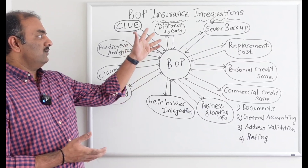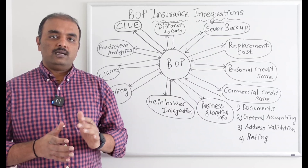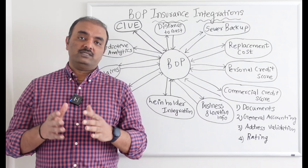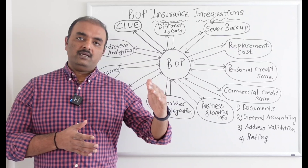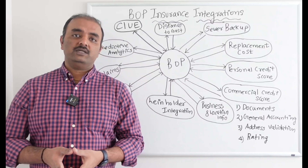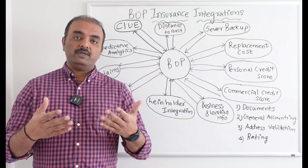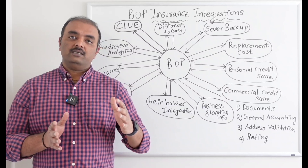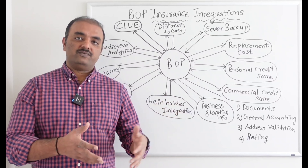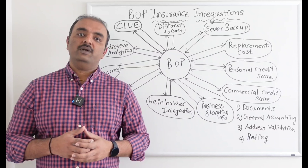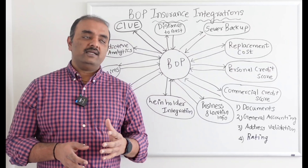The first integration I want to talk about is distance to coast. As I mentioned, the Business Owners Policy is structured similarly to homeowners — it covers the commercial building and commercial liabilities. The distance to coast integration helps determine the total distance between the business building and the nearest seashore. This helps the insurance carrier determine how much premium to charge the customer based on coastal risk exposure.